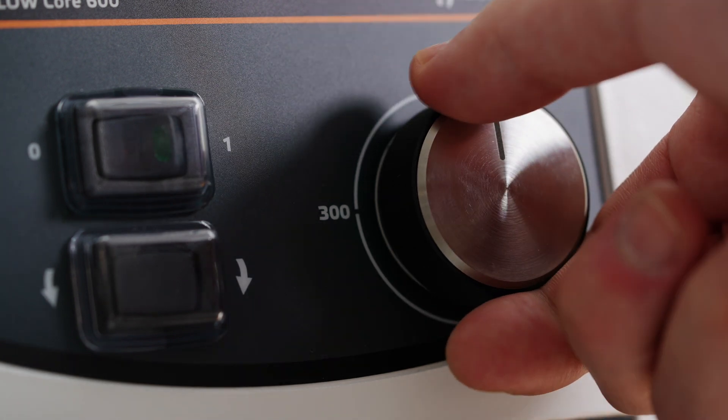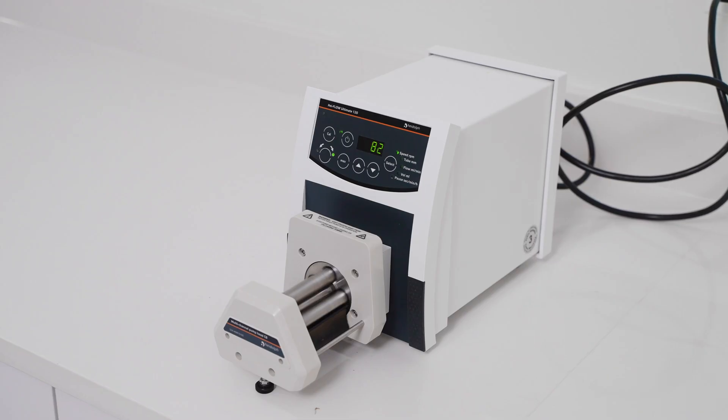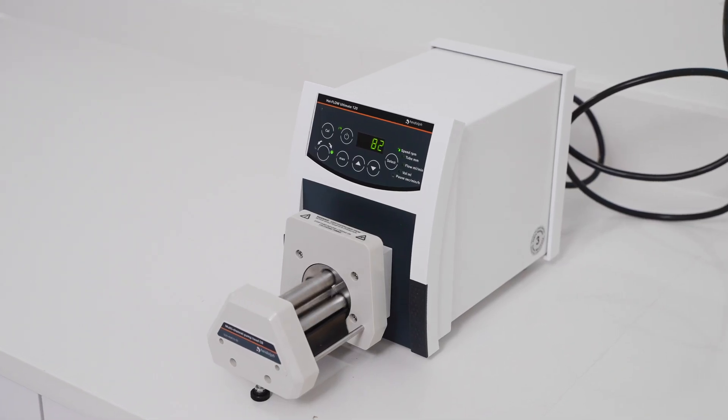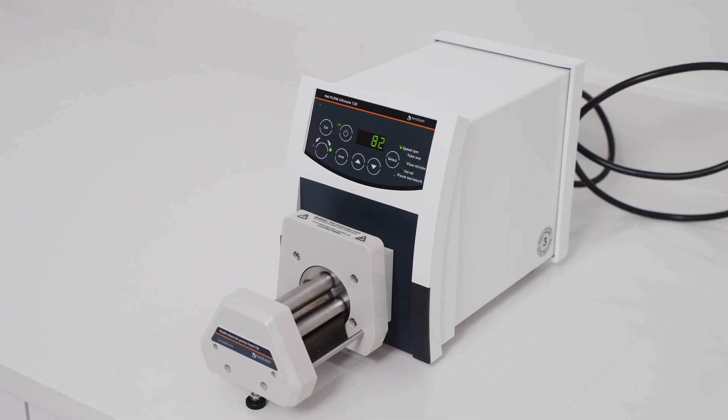When it comes to single-channel and multi-channel pump heads, the 120 variants can be adapted to both single-channel and multi-channel pump heads, while the 600 variants can only be adapted to single-channel pump heads. Therefore, if you need a multi-channel pump head, then we would suggest the appropriate 120 variant.